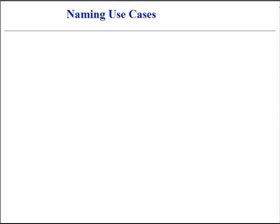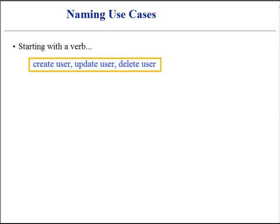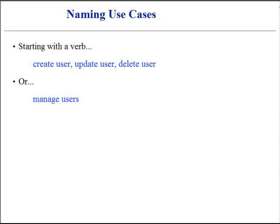It is common practice to name use cases starting with a verb — for example, create user, update user, and delete user. Sometimes the details could collapse into a single use case; in the above example, its name could be 'manage users.' Defining use cases has several levels of effort, ranging from a few minutes to simply record names, up to entire weeks to write fully-dressed versions of all possible use cases. In the context of iterative development, we will discuss when and how much time needs to be dedicated to the use case specification.